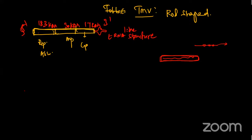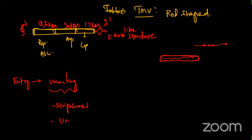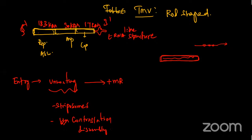The procedure begins with entry, followed by uncoating. There are strategies like striposomes or co-translational disassembly - mechanisms for how the coat protein is removed. Each strategy differs per virus. After coat protein removal, for TMV - a single-stranded RNA virus - the single-stranded RNA acts directly as mRNA, producing protein and acting as a template for complementary strand synthesis.